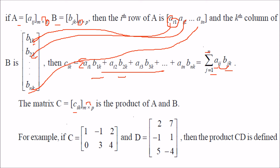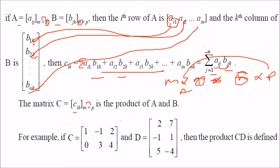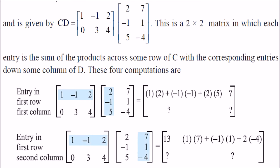As a worked example, if C is a 2×3 matrix and D is a 3×3 matrix, the product is possible. For the first row, first column: 1·2 + (−1)·(−1) + 2·5. For the first row, second column: 1·7 + (−1)·1 + 2·(−4). Moving to the second row: 0·2 + 3·(−1) + 4·5, then 0·7 + 3·1 + 4·(−4). The final result is 13, −2, 17, −13. This illustrates how to multiply matrices.